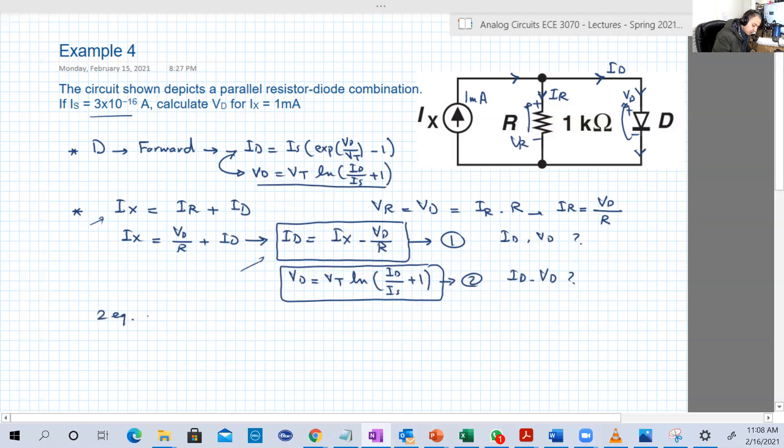Same unknowns. So now we have two equations and two unknowns. But unfortunately, one of them is a nonlinear equation. So we cannot go forward with easy steps to find ID or Vd, then substitute and get the other variable or unknown.